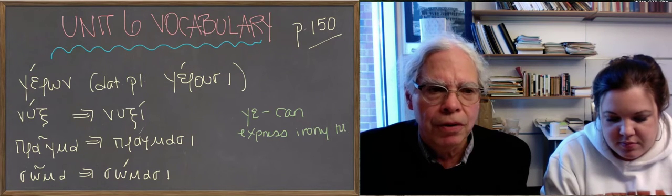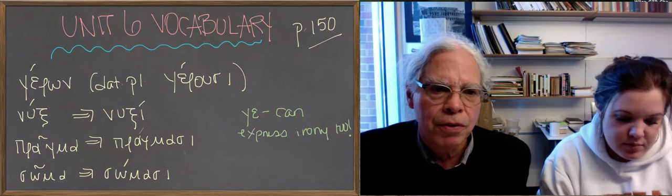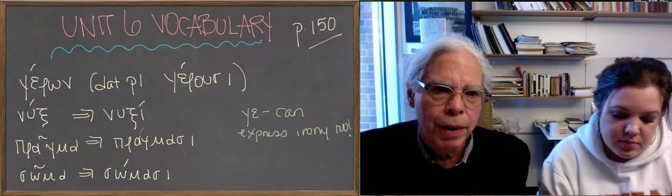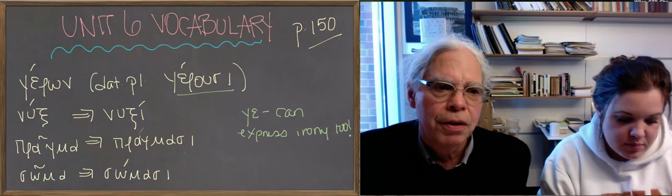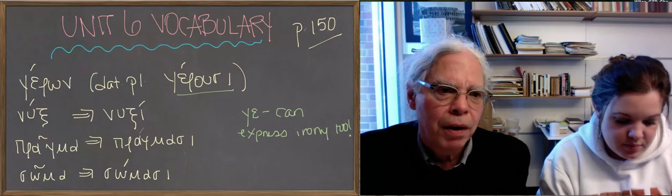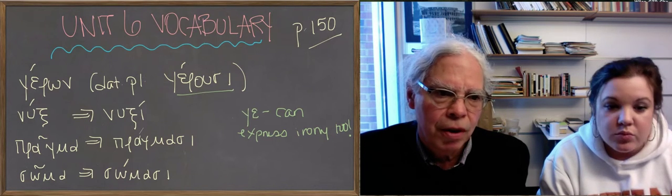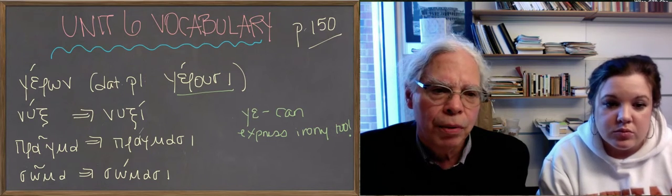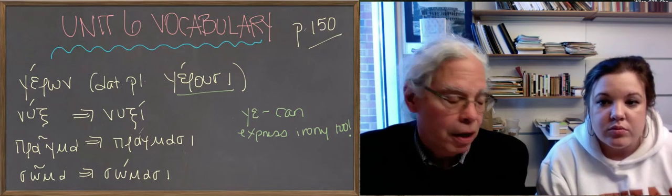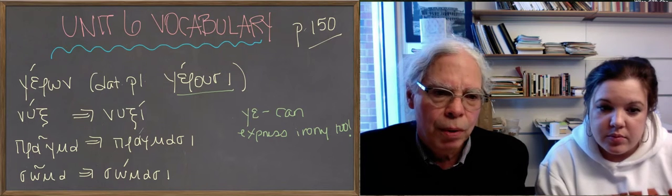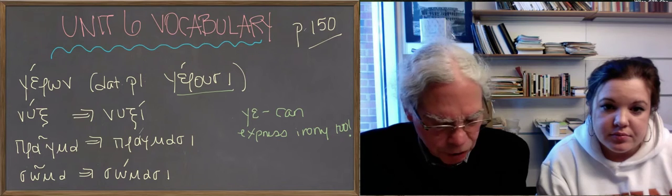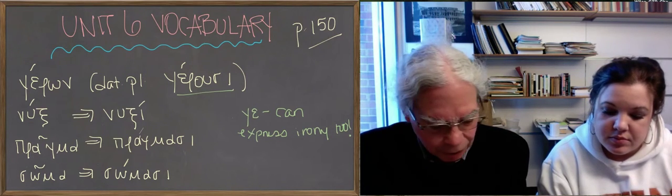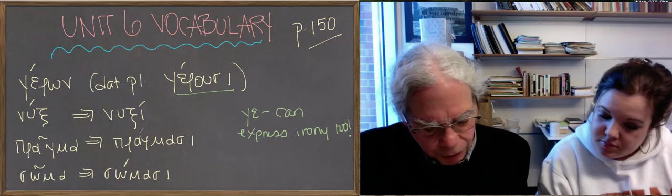We've put on the blackboard there are a few third declension nouns and their dative plurals. We talked about how these are formed, but there is geron, the word for old man, its dative plural is gerusi. There is nux, the word for night, its dative plural is nuxi. And pragma, pragmasi, because you look at the genitive, it's pragmatos, there's a t there, so when you add the t to the s, you get an s, the t disappears. And soma, somasi, it's somatos, the same, and so forth. So make sure you understand how these are working. Helene, helenes is another one.